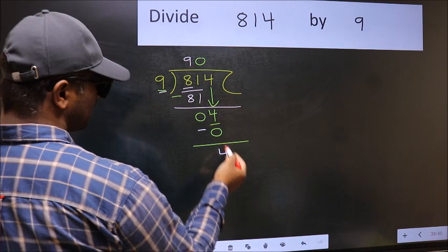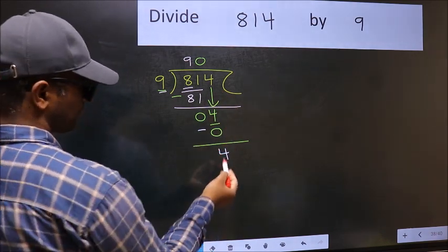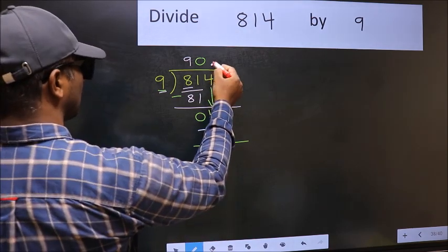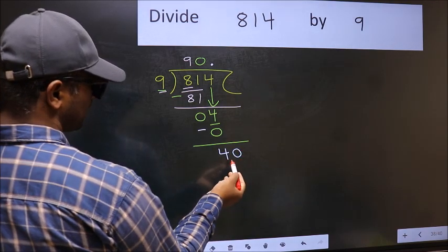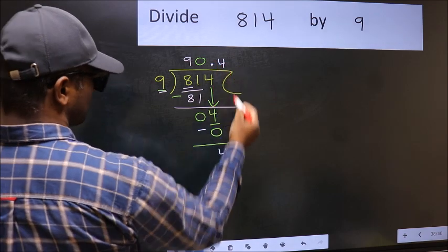Over here, we did not bring any number down, and 4 is smaller than 9. So now you can put dot and take 0. So 40. A number close to 40 in 9 table is 9 fours 36.